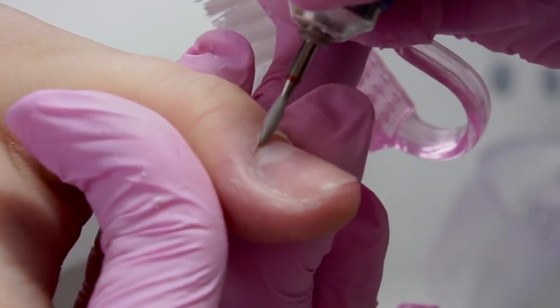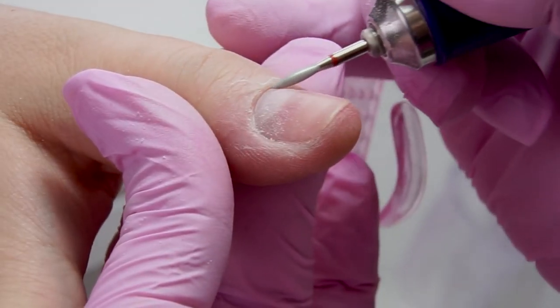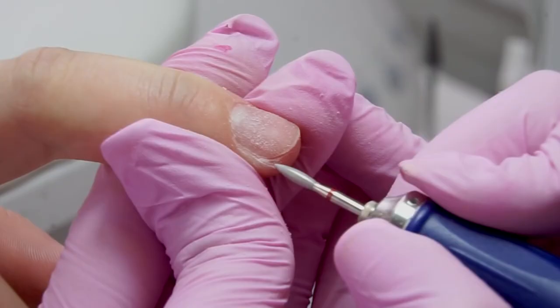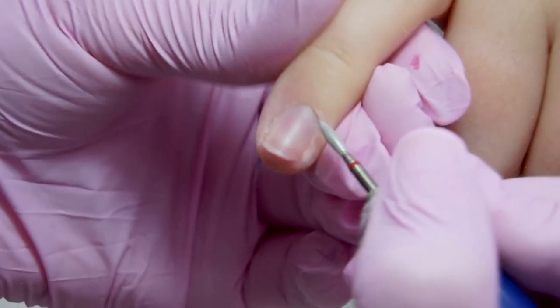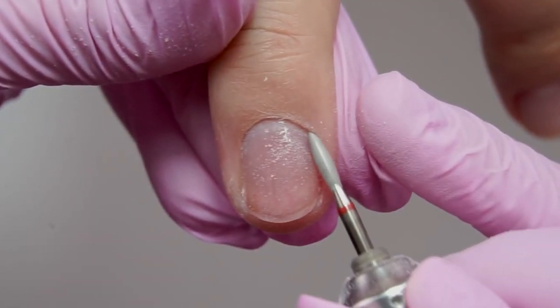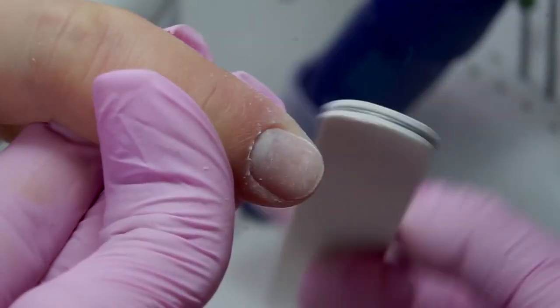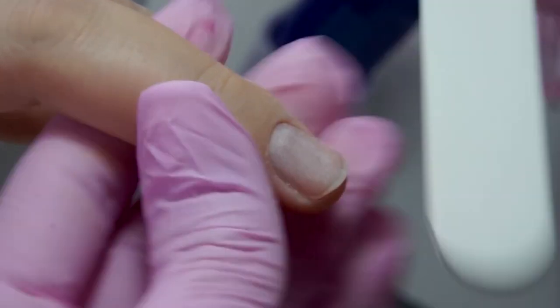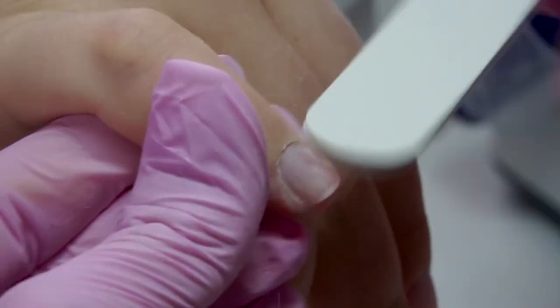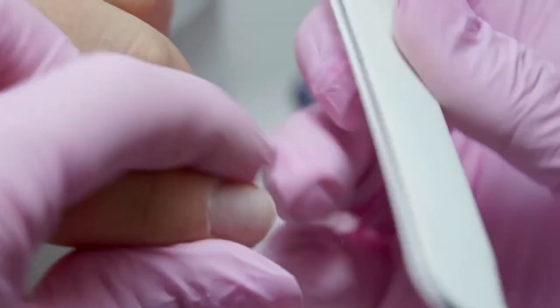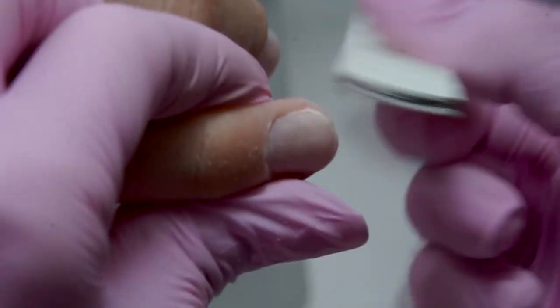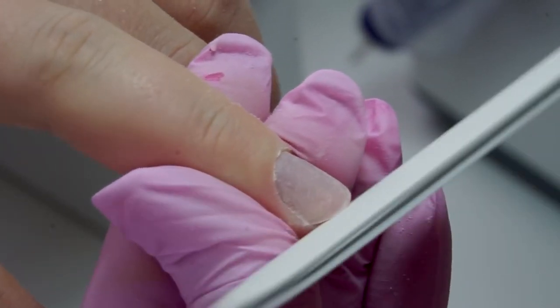Lifting up the cuticle, I file the nail surface before cutting the cuticle in order to prepare the nails. In one direction, from left to right. I'm using a soft 180-240 grit file. Since my model's nails are not long, I'm just fixing them with a file.